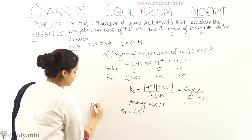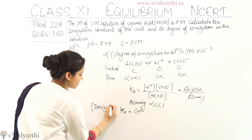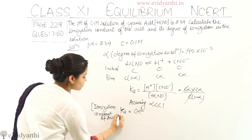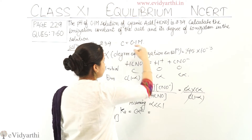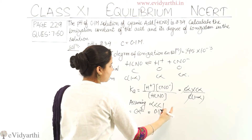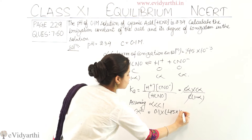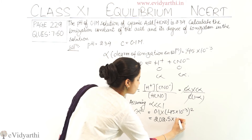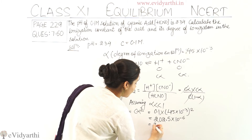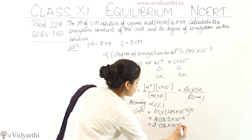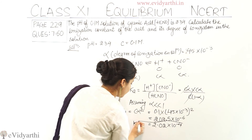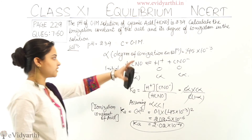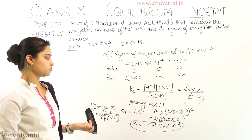Ka is the ionization constant of the acid. So ionization constant Ka = Cα² = 0.1 × (45×10⁻³)² = 0.1 × 2025×10⁻⁶ = 202.5×10⁻⁶, which can be written as 2.02×10⁻⁴. So Ka = 2.02×10⁻⁴, and the degree of ionization in the solution is 45×10⁻³.